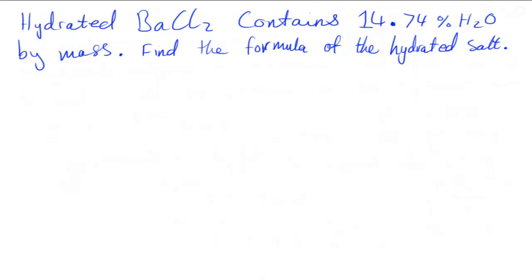What I have here is a problem involving a hydrated salt — in this case it's hydrated BaCl₂, which is barium chloride. I've been given a percentage by mass of the water, and I need to find the formula of the hydrated salt. Hydrated BaCl₂ contains 14.74% H₂O by mass — find the formula of the hydrated salt.